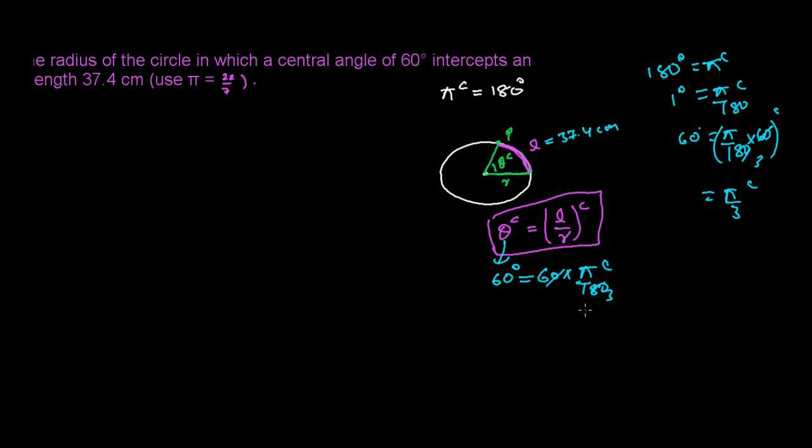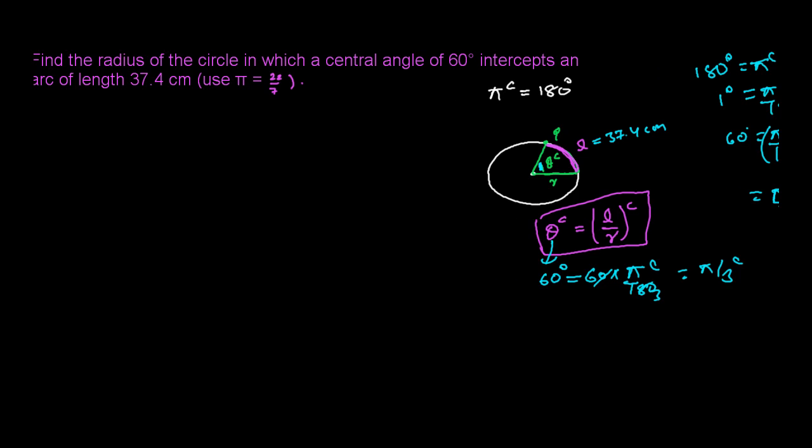So we get π/3 radians. Now we have the angle subtended by the circle. We know L and we know θ, so we can easily find r. Let's do it.